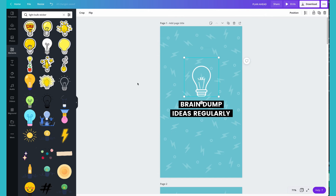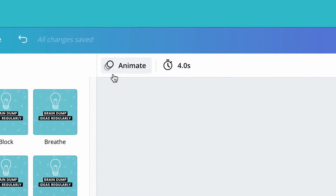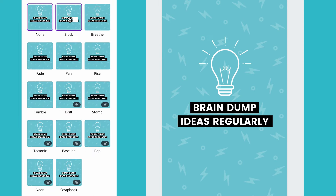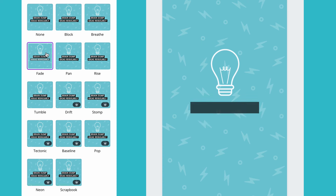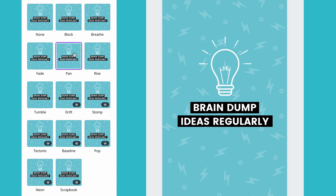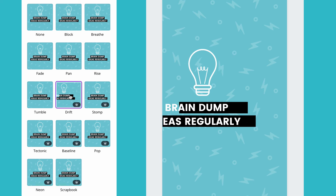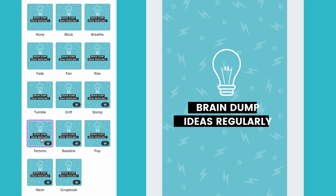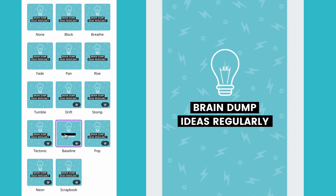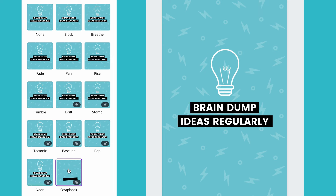Once you are happy with your design, it's time to start animating. To animate text using Canva, all you need to do is click outside of your canvas and the animate button will appear. The animate options include: None, Block, Breathe, Fade, Pan, Rise, Tumble, Drift, Stomp, Tectonic, Baseline, Pop, Neon, and Scrapbook. I suggest going through all the options and testing them out before committing to the one you like most.